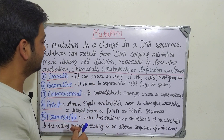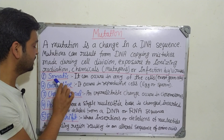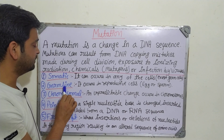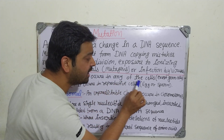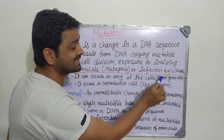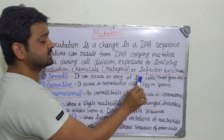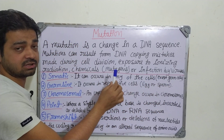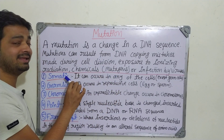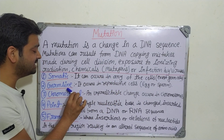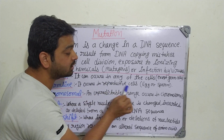There are five types of mutation basically described. The first two types are the main types: somatic and germline. Somatic mutation can occur in any of the cells of the body except the germ cells. Remember, except germ cells — whatever cells where DNA copying mistakes occur, that is called a somatic mutation.